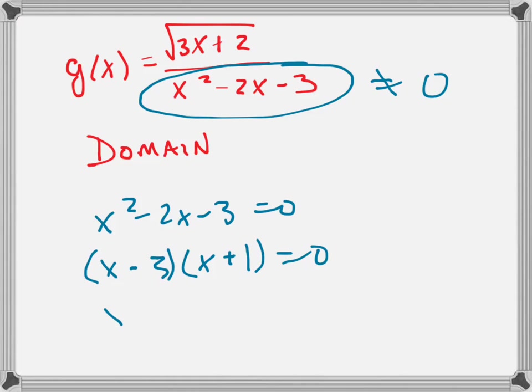So x either equals 3 or x equals negative 1, and those it cannot equal. It can't equal either of those because if it did, the bottom would be equal to 0. That's the first restriction.